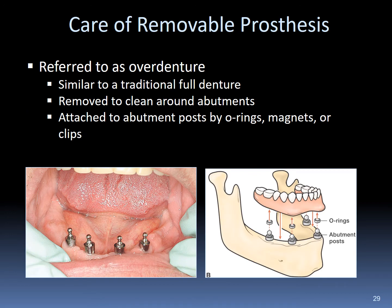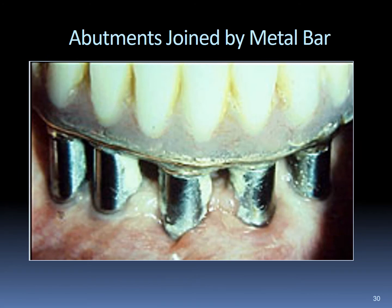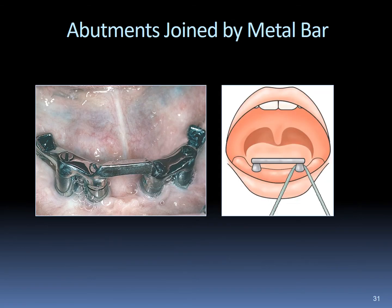In care of the removable prosthesis, also known as an overdenture, procedures are similar to traditional full dentures. At all maintenance appointments, the overdenture must be removed and cleaned, as well as the abutments. The attached abutment posts are prepared to support the overdenture with O-rings, magnets, or clips. Accumulation of biofilm and calculus is common around the abutments and the supporting bar. Cleaning around an abutment bar may be performed using superfloss, thin yarn, and other flossing aids to sweep under the bar and remove biofilm accumulation.